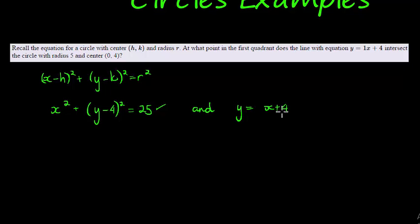I think it would probably be easier just to solve for x. Let's say x = y - 4, and then we substitute this in here. So (y - 4)² plus (y - 4)² equals 25.